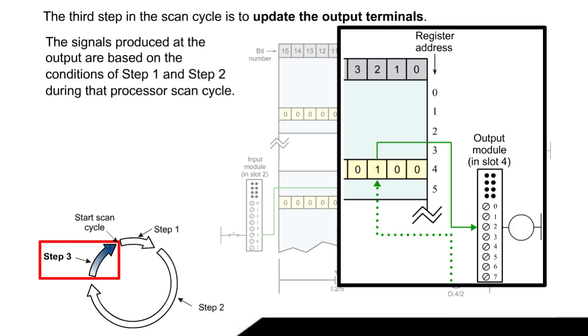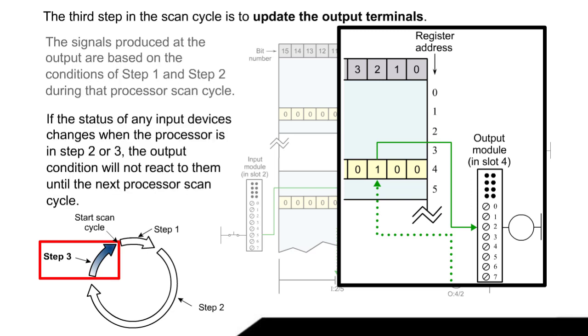The signals produced at the output are based on the conditions of step 1 and step 2 during that processor scan cycle. If the status of any input devices changes when the processor is in step 2 or 3, the output condition will not react to them until the next processor scan cycle.